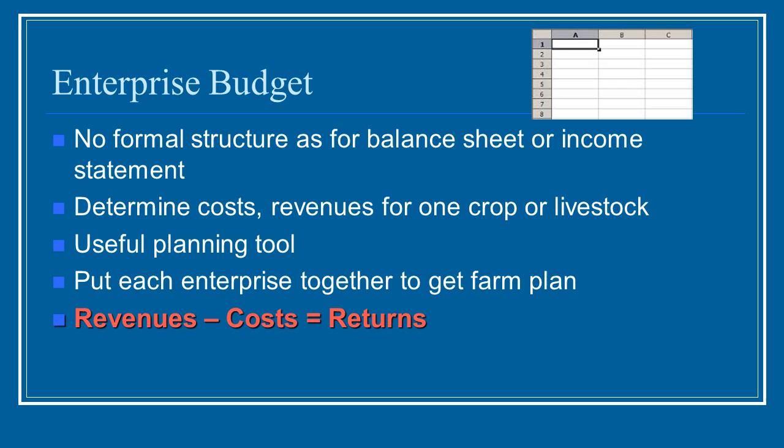Enterprise budgets are a way of planning and determining what, if any, profit you will be making from one particular crop or livestock. It's different from a balance sheet or an income statement because there's really no formal structure. Although it does incorporate the costs and the revenues — what you'll be making off of your products — and then to determine what your return, what actually you will be taking home. So it's a very useful planning tool. It doesn't have as much detail as a balance sheet; it's really for determining if you want to move ahead with a certain production plan.